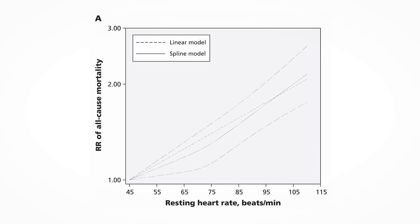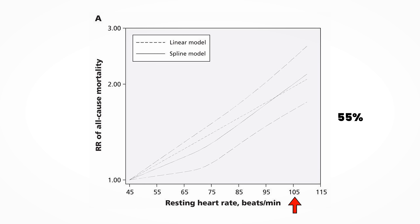This made a lot of people upset and worried because they found themselves in the increased risk category. Having a resting heart rate of 60 is only a 12% increase in relative risk compared to a resting heart rate of 45, which isn't that much, but it's still not optimal. A resting heart rate of 105 would be a 55% higher risk, which would be quite concerning.